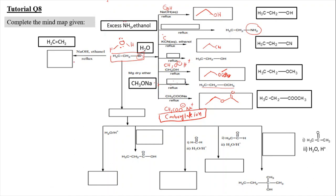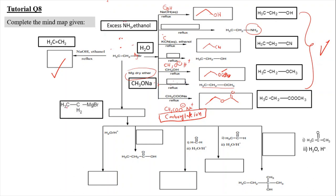Continuing with the mind map: bromoethane reacts with magnesium in dry ether to produce the Grignard reagent CH₃CH₂MgBr. When CH₃CH₂MgBr undergoes hydrolysis with water, MgBr is replaced by hydrogen, giving CH₃CH₃ — ethane (a two-carbon alkane). The Grignard reagent reacts with CO₂ followed by hydrolysis to produce a carboxylic acid — MgBr is replaced by COOH group.